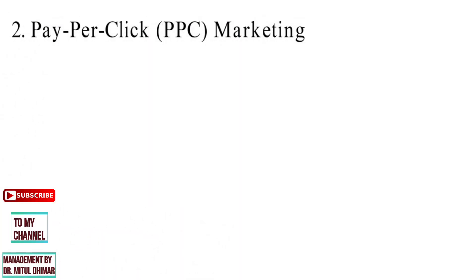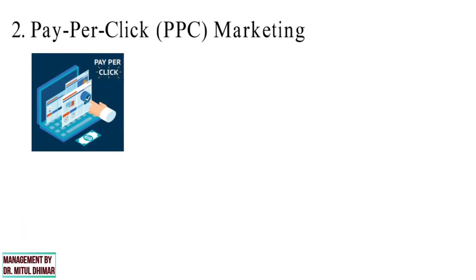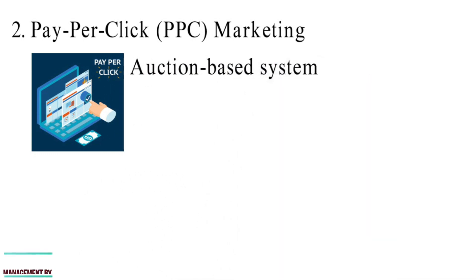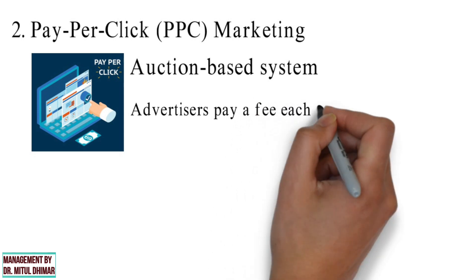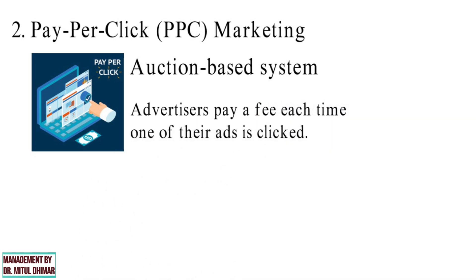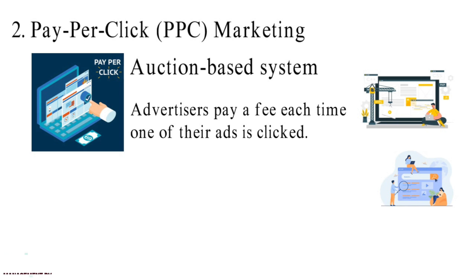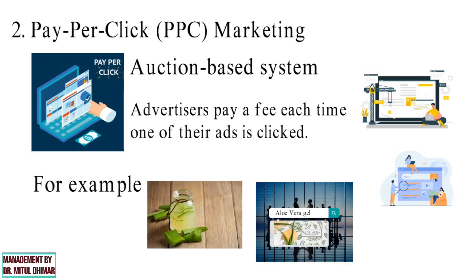Strategy number 2: Pay Per Click Marketing. Pay Per Click is a paid form of advertising based on an auction-based system. It is an internet marketing model in which advertisers pay a fee each time one of their ads is clicked. Basically, it is a way of buying visits to your site rather than trying to earn those visits organically. It allows advertisers to bid on ad placement on a sponsored link in a search engine. For example, if we bid on the keyword 'aloe vera gel,' our ad might show up in the top spot on the Google results page.